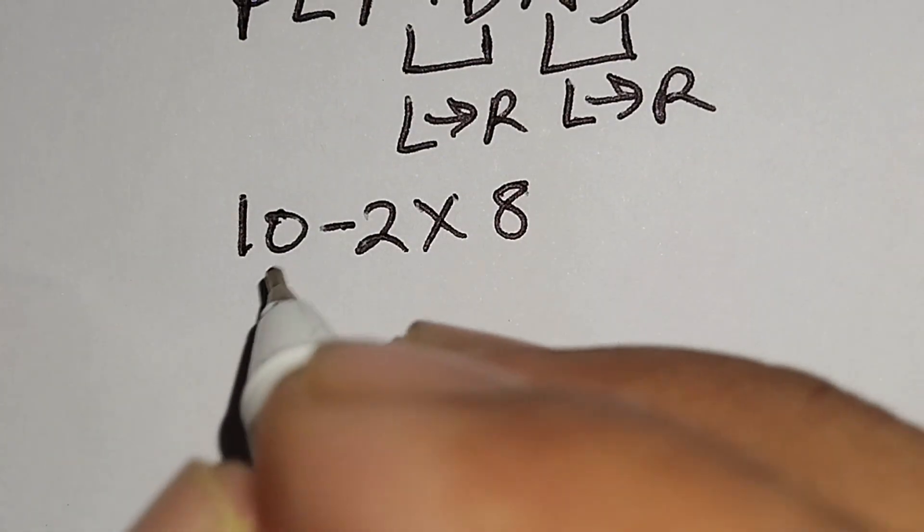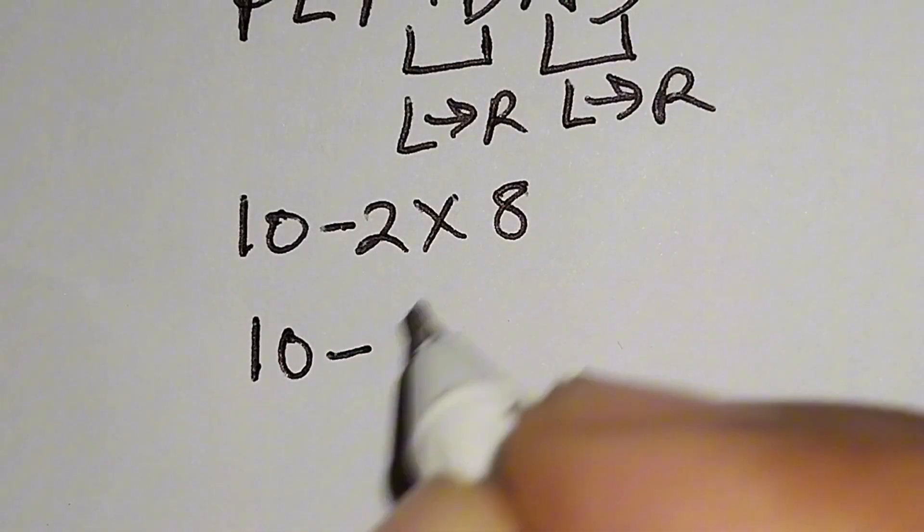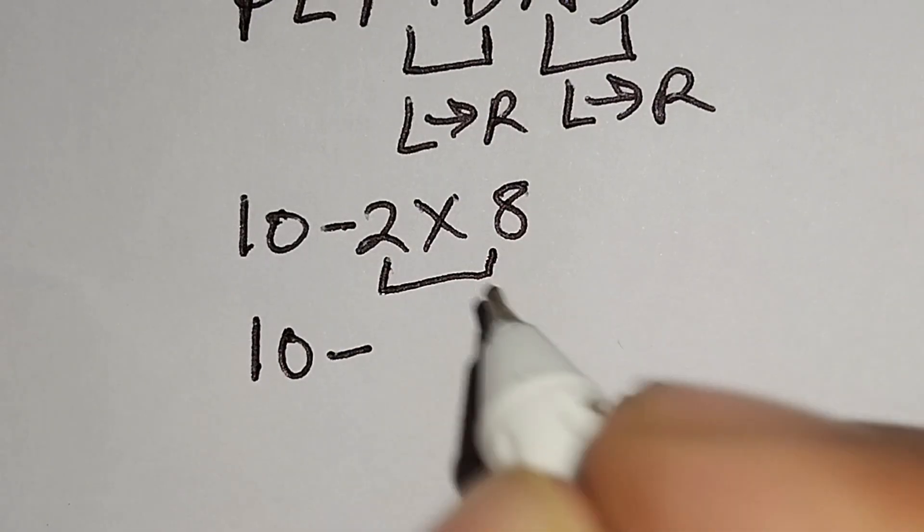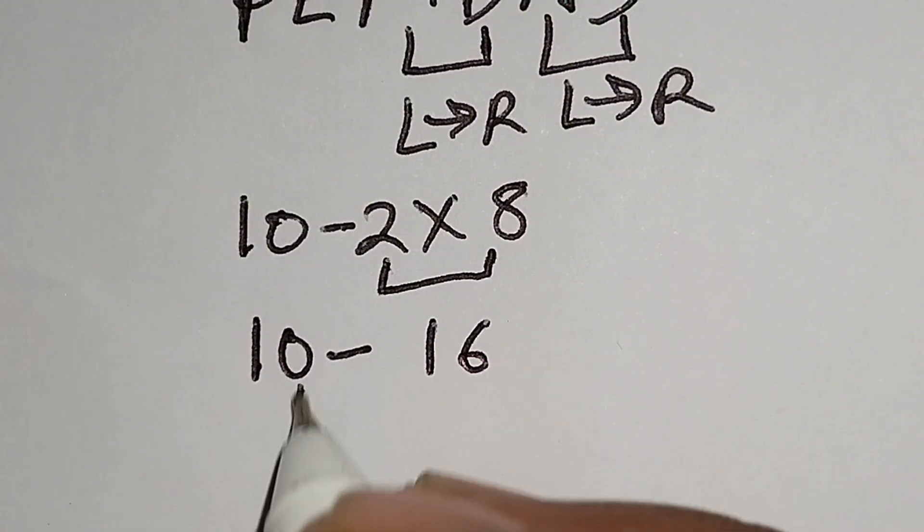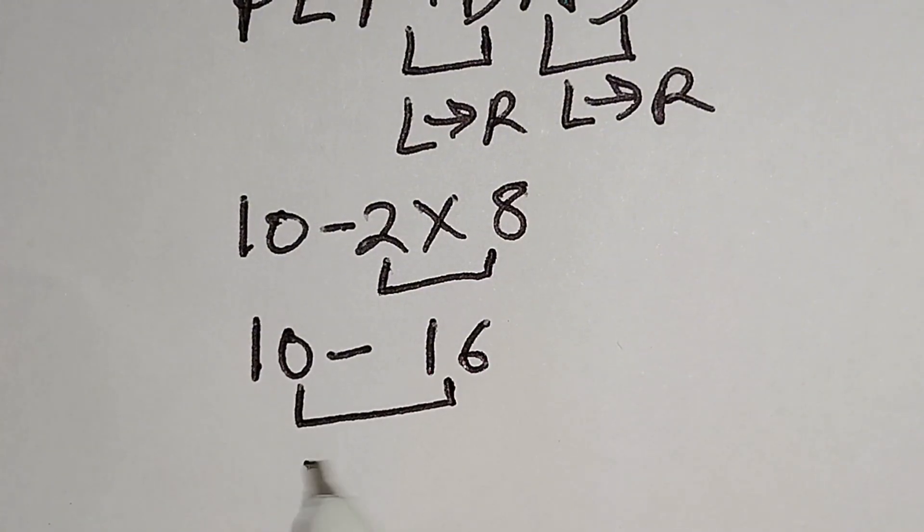Here, this 10 minus this 2 times 8 gives us 16. 10 minus 16 gives us negative 6, and this is the correct answer.